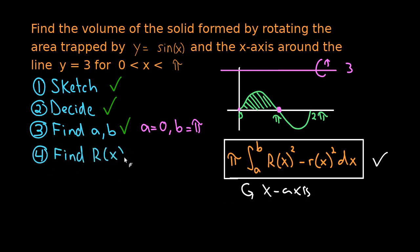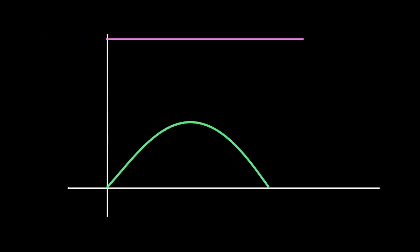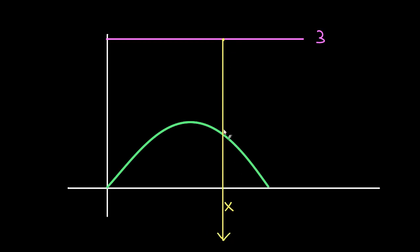Step four: find the radii — the outer radius capital R(x) and the inner radius lowercase r(x). To do that, we're going to use a bigger sketch so it's easier to see. Here we have the line y equals 3, and sine of x below it. I'm going to pick some arbitrary x value and draw a line from the axis of rotation through the area — almost thinking of it as going all the way through.